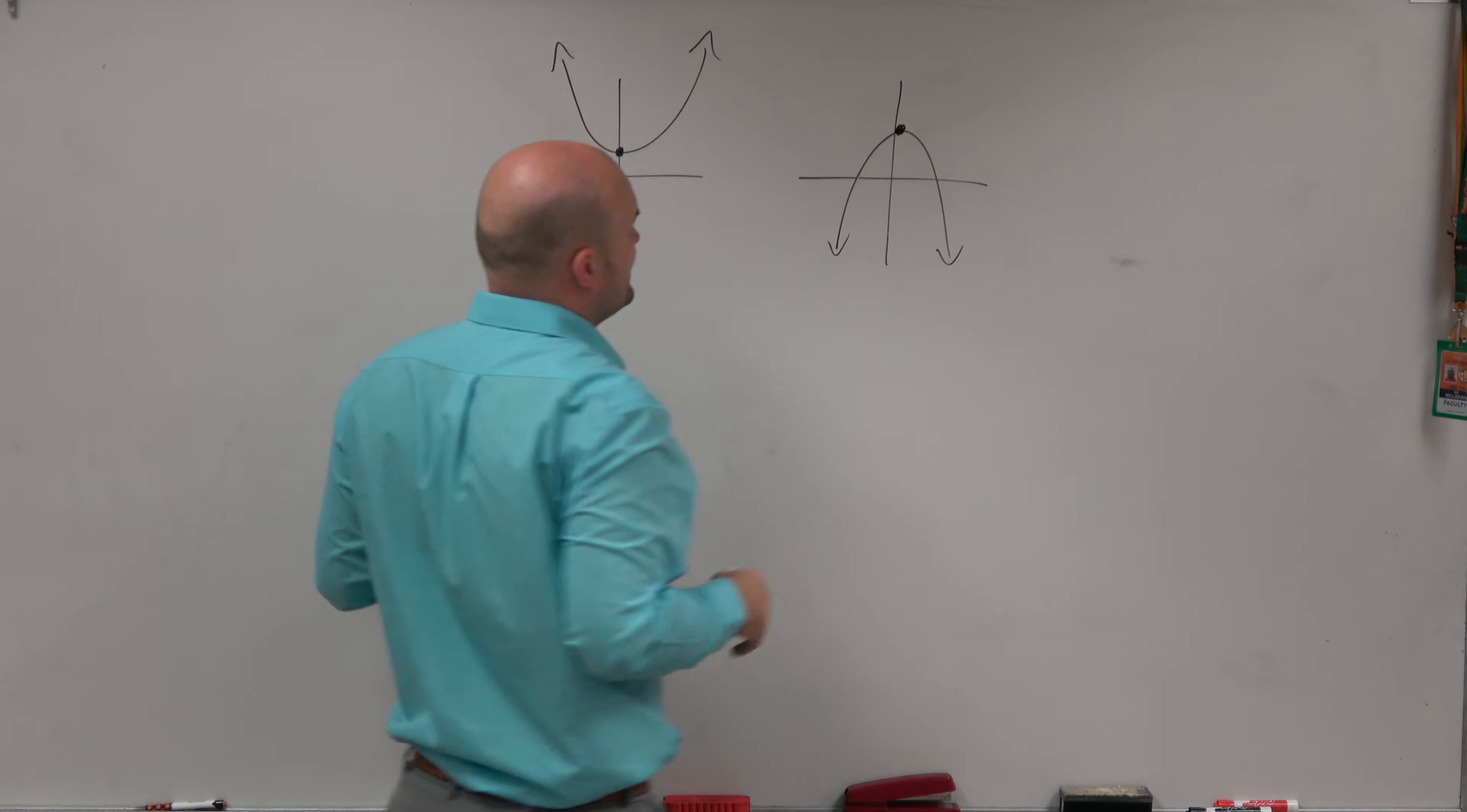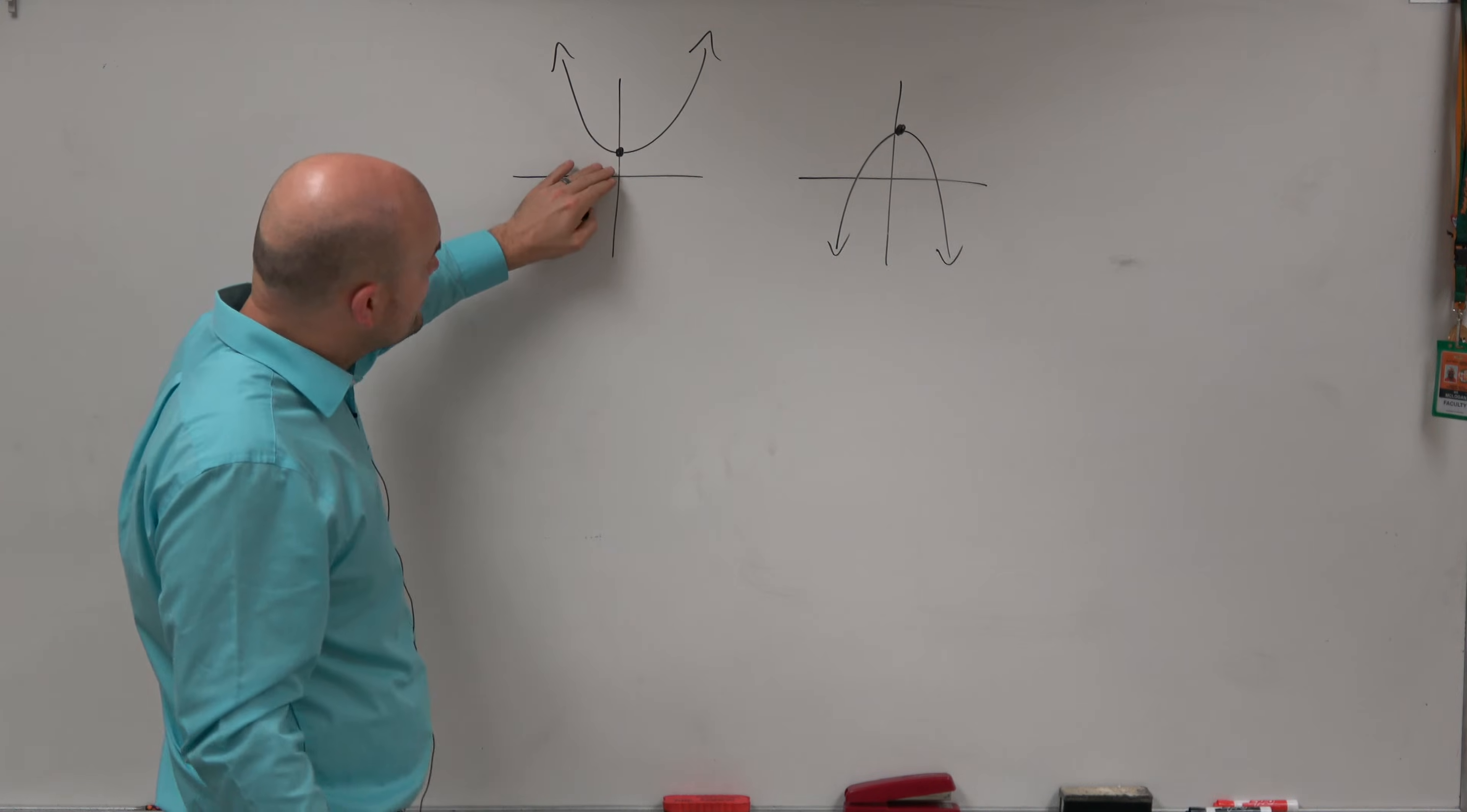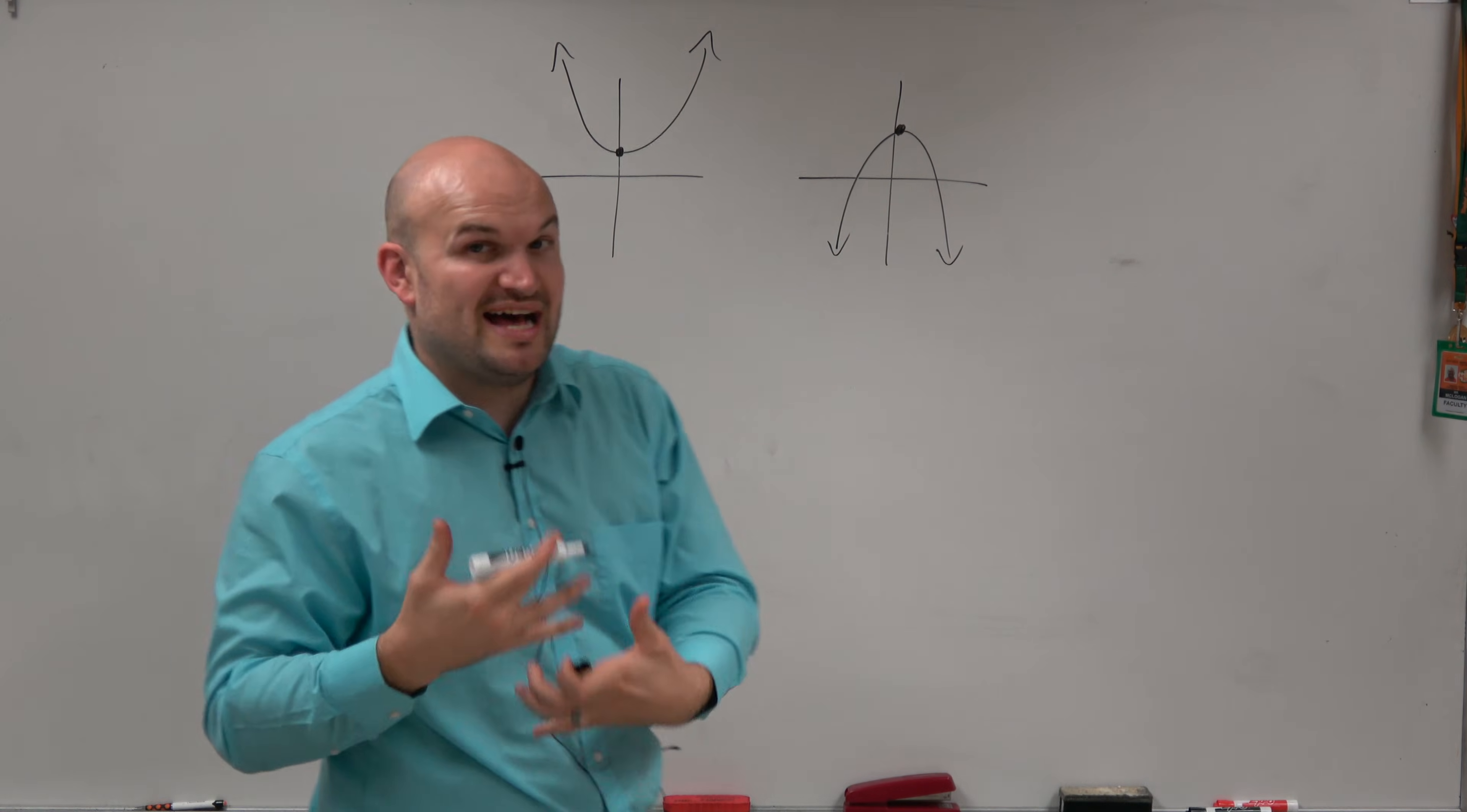What we notice about this is at the vertex, those are our extrema, right? Those are our absolute max or absolute min. So here's our absolute min. We know this graph is going to continue going in the positive direction. It's never going to go below that value.